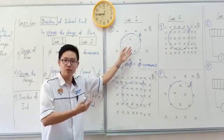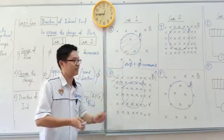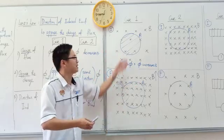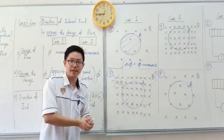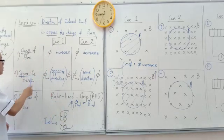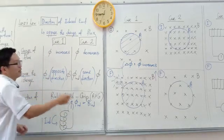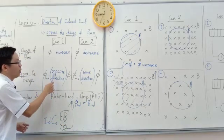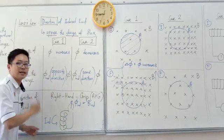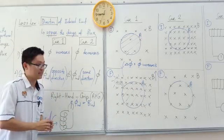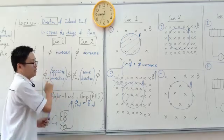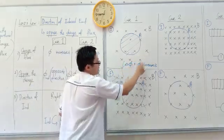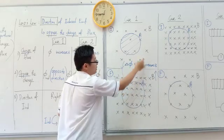Do not allow it to increase — I want to reduce that. When something increases, it tries to reduce that. How to reduce? This coil will suddenly produce an opposite direction induced flux. This is the original flux — also called the external flux.